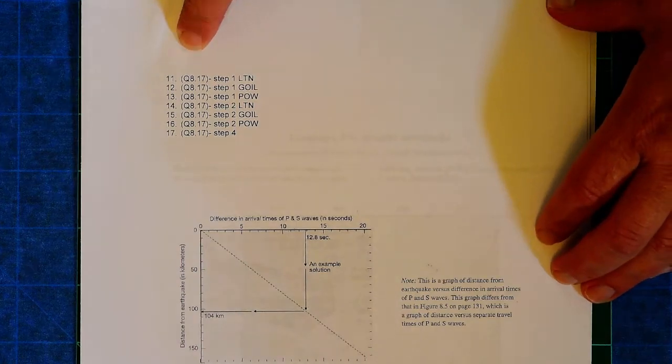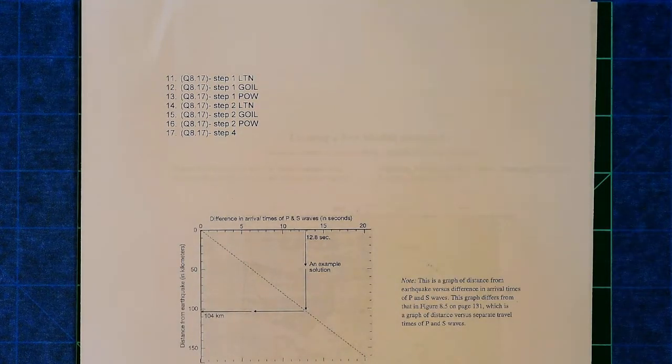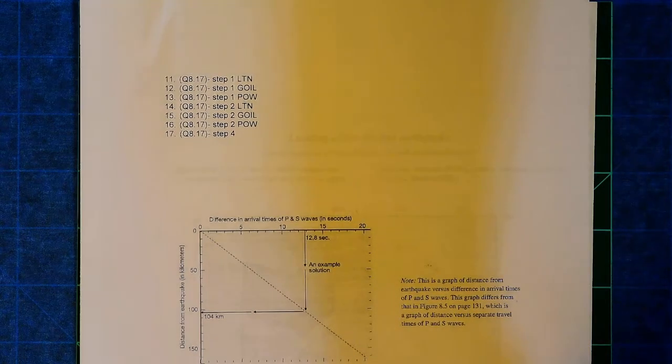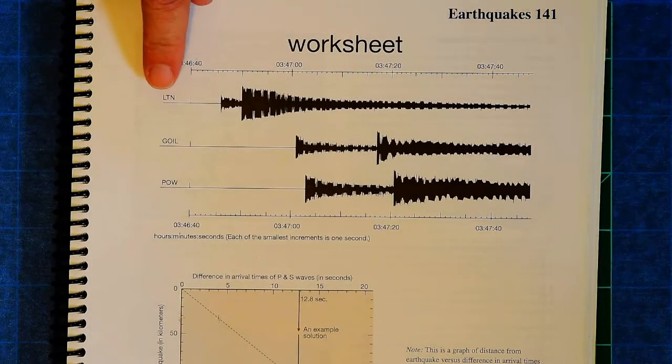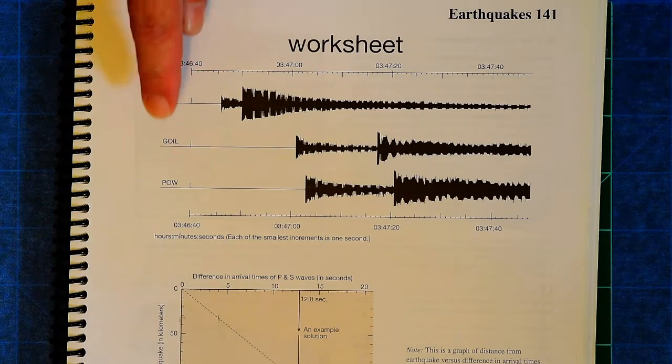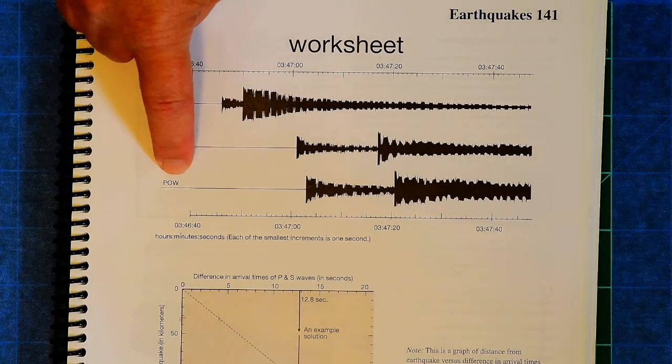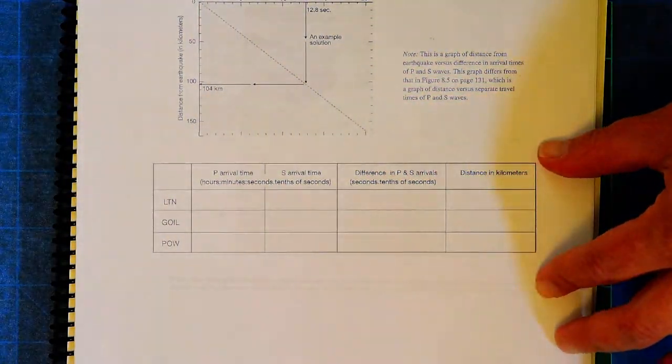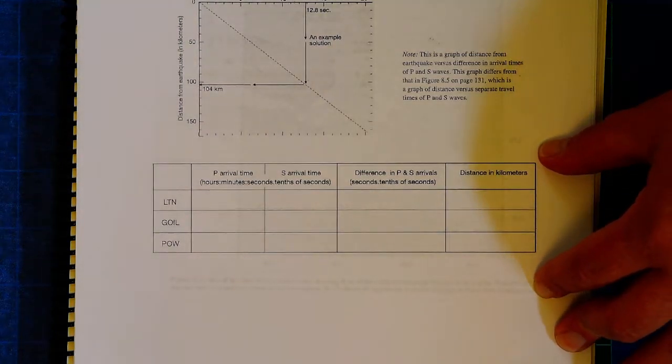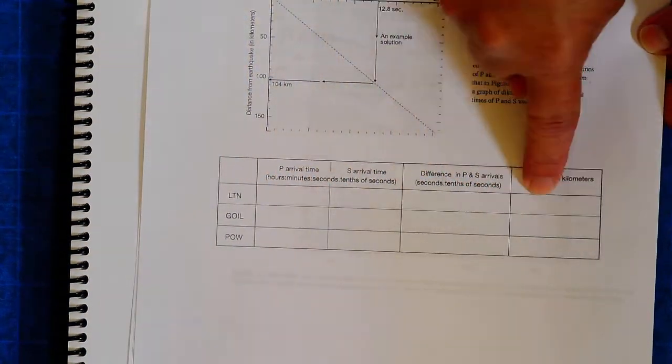Okay, another part of this lab is these questions here. This is where you are going to actually figure out the epicenter of an earthquake given real data. You're going to be given real seismograms, and those are shown right here. We have the seismogram at station LTN, the one at GOIL, and the one at POW. And on your lab, you have this chart to fill in. So let's look first at LTN. There we have LTN on the chart.